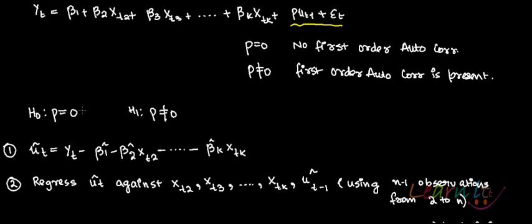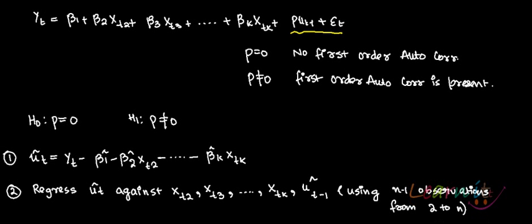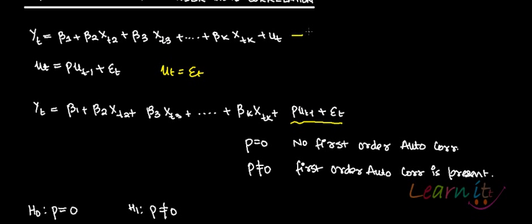Your hypothesis is: null hypothesis is that rho is equal to 0, and the alternative hypothesis is that rho is not equal to 0. So you will run the initial model — the first model — and you will save û_t.